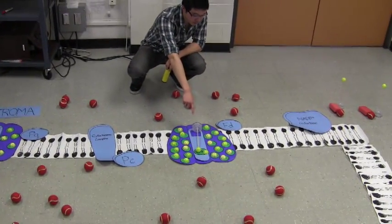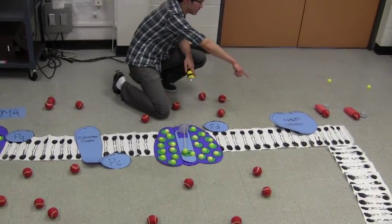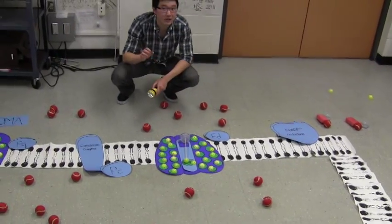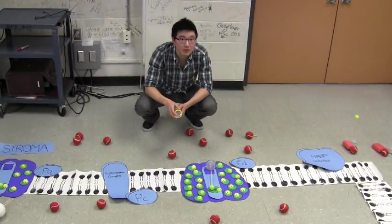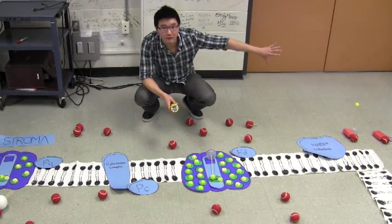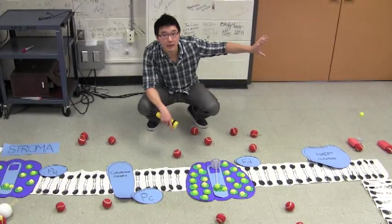to photosystem I, where it was energized with light again. And then that high-energy electron was given to NADP plus reductase, which placed that high-energy electron into NADPH.